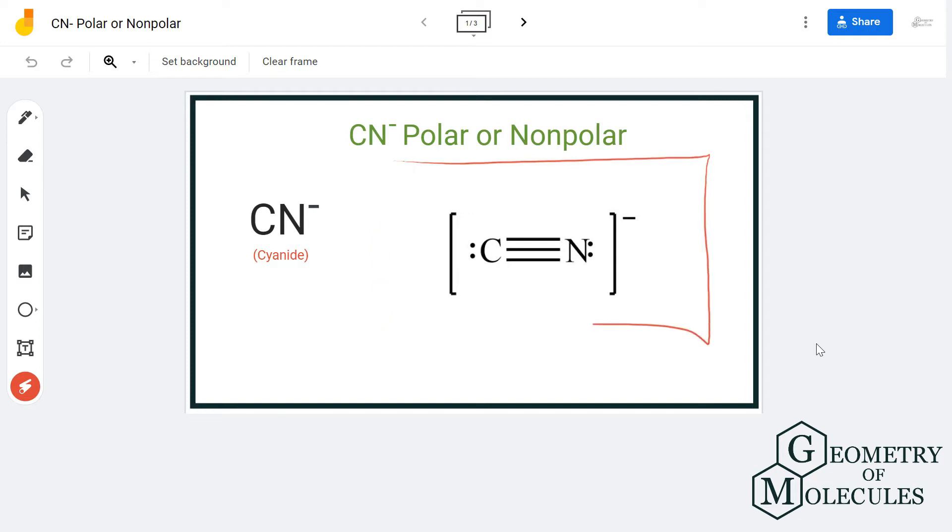Here is the Lewis structure of CN⁻ ion in which carbon is forming a triple bond with nitrogen, and there is a lone pair of electrons on both carbon and nitrogen atoms.